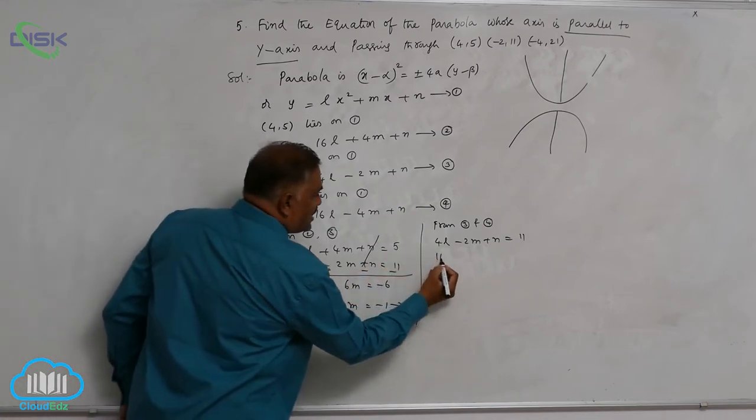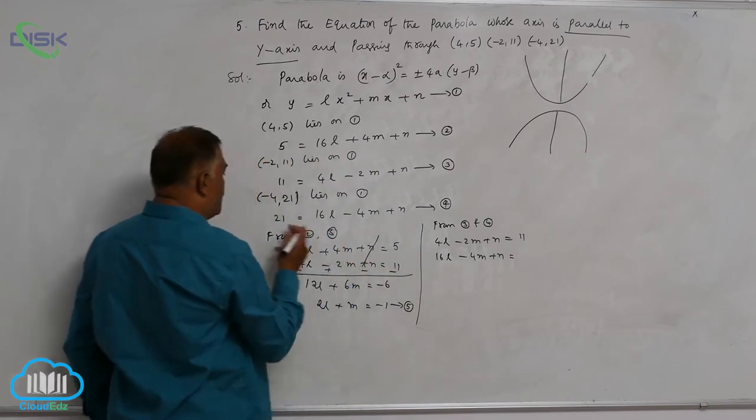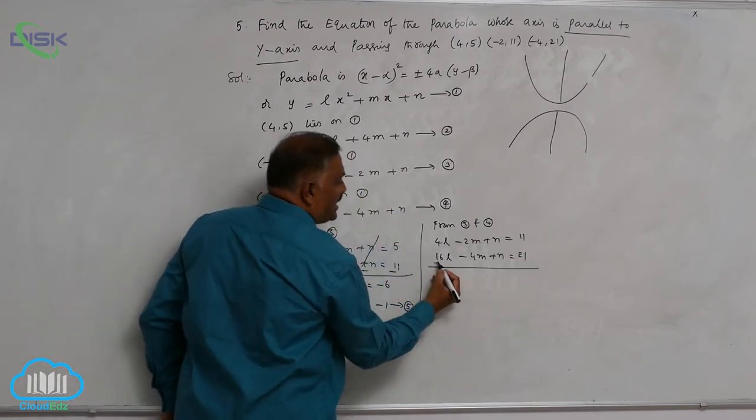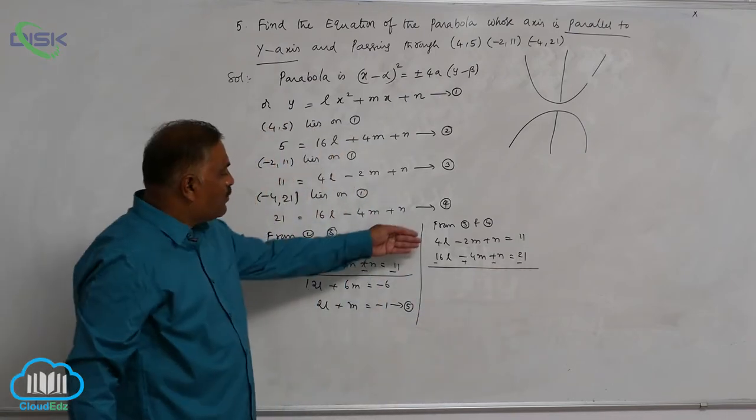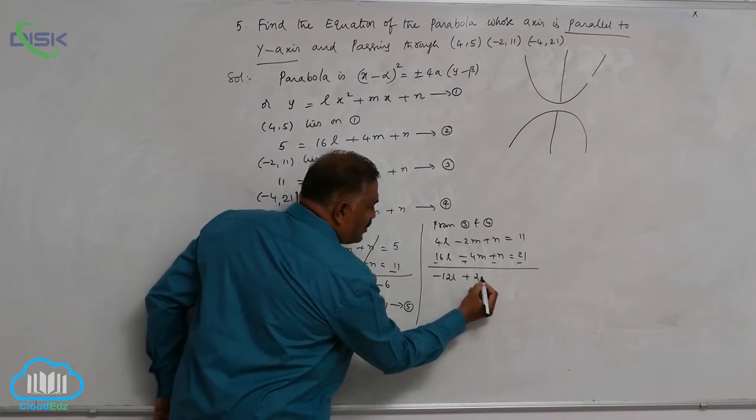Again take subtraction. Now 4 minus 16 is minus 12l plus 2m, n gets cancelled, is equal to minus 21.